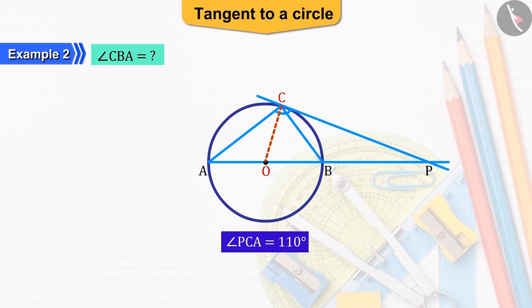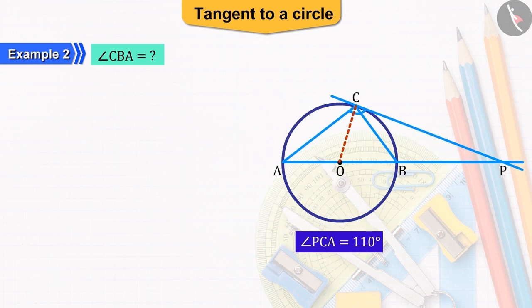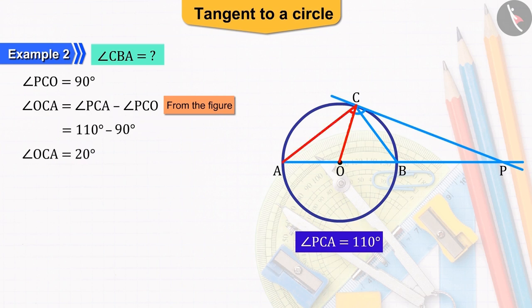Let us join point C to the centre O. Now, you can see here that OC and CP are the radius and tangent of the circle at point C respectively. Thus, angle PCO will be right-angled, with the help of which we can find the value of angle OCA.